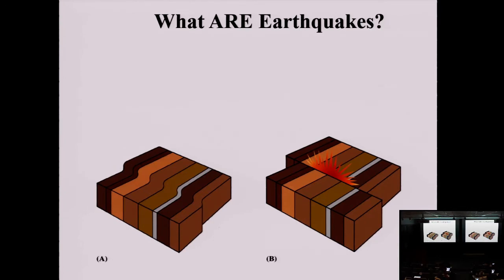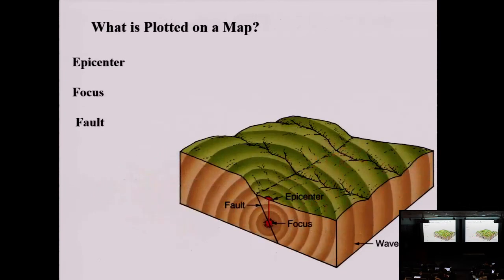Let's return to what's plotted on that previous map—those circles. We know earthquakes are deep down within Earth, so how do we plot them on a two-dimensional map? There are three fundamental pieces of terminology. First, the focus: the focus is the point from which the rupture emanates, the point at which energy is released. The focus is the physical position inside Earth—that's where the break starts from.